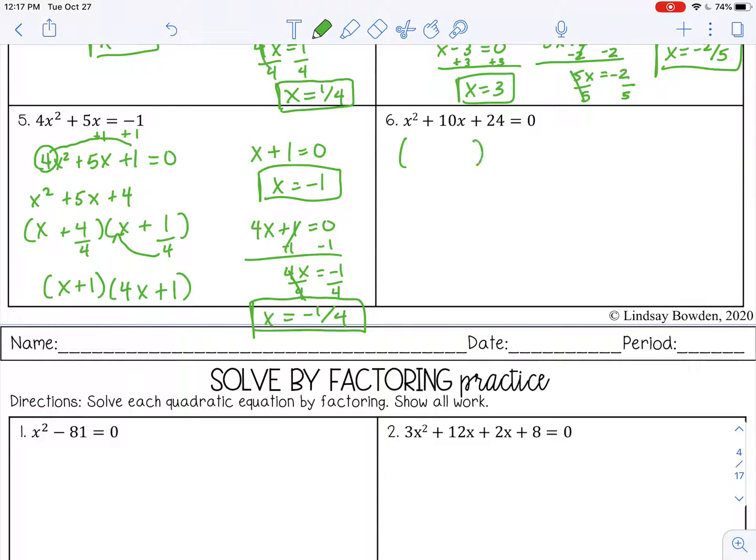Number six, this is a trinomial where a is 1, so this should be pretty easy to factor. Now I will say, not every quadratic function can be factored. All of these on this notes page are able to be factored, but you won't always be able to factor and we will go over different methods when you can't factor in future lessons. Factors of 24 that will add to give me 10: 1 and 24, 2 and 12, 3 and 8, 4 and 6. Four plus 6 is 10, positive and positive. Then we need to set both of these equal to zero. X equals negative 4, and x equals negative 6. You can go ahead and stop the video now and complete your practice.